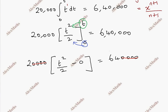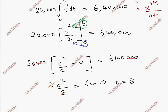Now, the equation becomes 20,000 times t squared by 2 equals 6,40,000. Simplifying, t squared equals 64. Therefore t equals 8. The answer is 8 years.